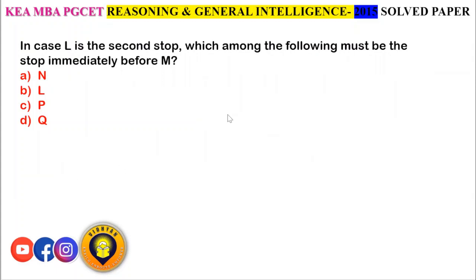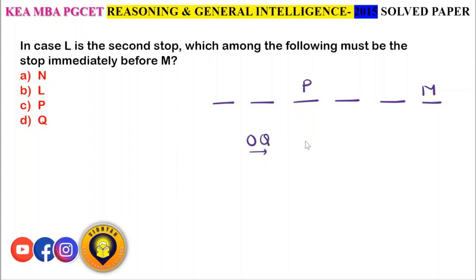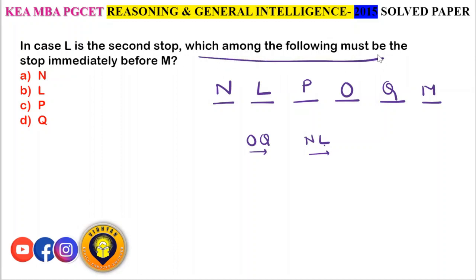In case L is the 2nd stop: the 1st stop will be N, 4th stop will be O, and 5th stop will be Q. Which among the following must be the stop immediately before M? Immediately before M the stop is Q — option D.